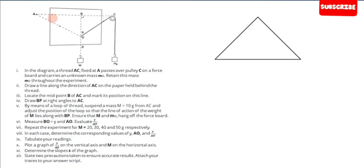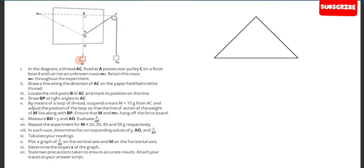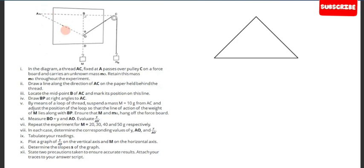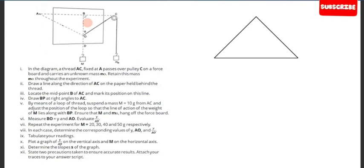One thing you need to understand is that since this mass m is placed at the middle, it means the tension on string AO will be equal to the tension on string OC. Basically the tension on this would be equal to the tension on this. I'm going to use a free body diagram to work out the tension on strings AO and OC.